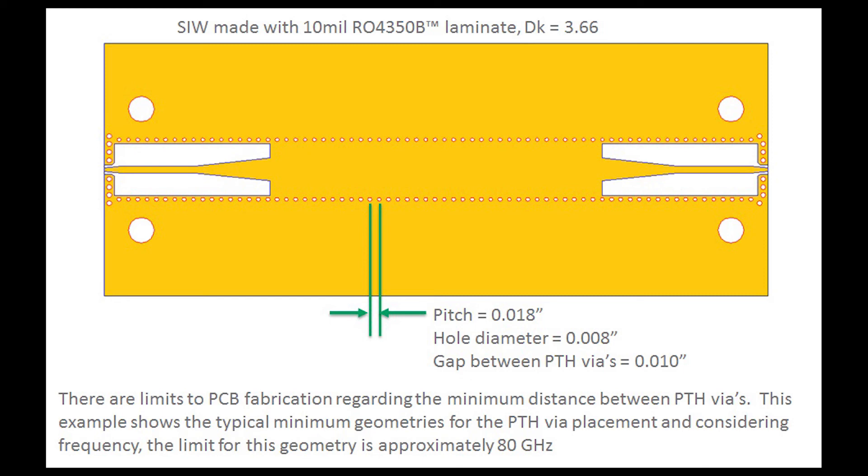There are exceptions. You can do some special processes to maybe get this even more close, or have the plated through holes even closer. But for typical standard printed circuit board fabrication, this is about as tight a pitch as you can get on this type of a circuit.